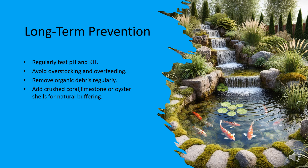Long-term stability comes from good maintenance practices. Regularly test your pH and KH levels. Avoid overstocking and overfeeding your koi. Remove organic debris and clean filters frequently. For natural buffering, consider adding crushed coral, limestone, or oyster shells to your filtration system.